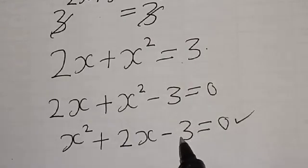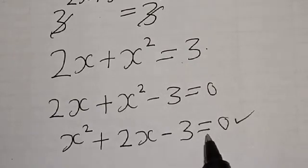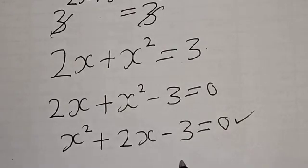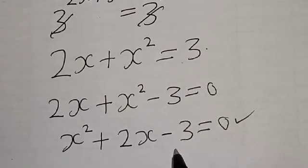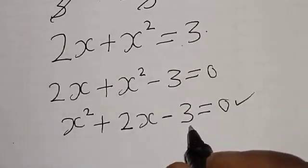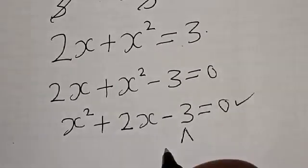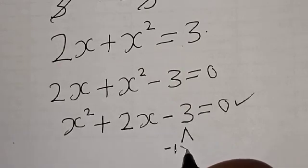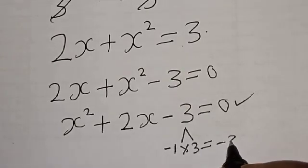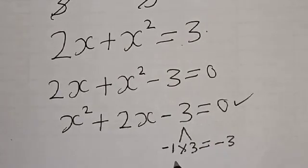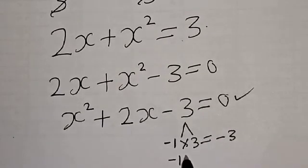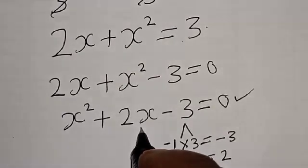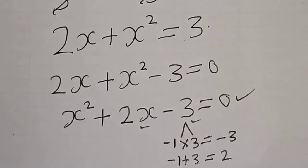In the factorization method, we look for two numbers such that their product gives minus 3 and their sum gives plus 2. If we take minus 1 and plus 3: minus 1 multiplied by 3 gives minus 3, and minus 1 plus 3 gives plus 2. Both conditions are satisfied.